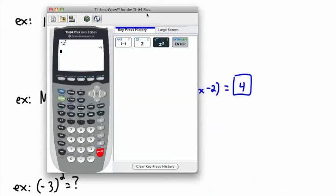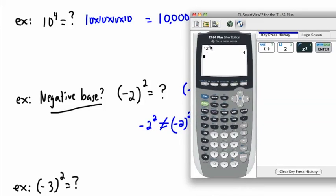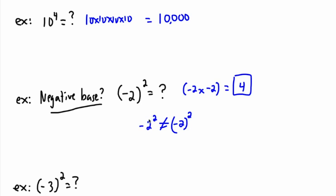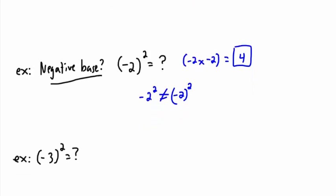What did the calculator do? It follows the rules of order of operations. We always do exponents first. So if you say negative 2 squared, it says: I have a negative and I have 2 squared — but first I do 2 squared. 2 to the power of 2 is 4, and then multiply by negative 1, which gives negative 4. So negative 2 squared is not the same as negative 2 in brackets, squared. If you want to say negative 2 squared, make sure you put negative 2 in brackets. Your calculator isn't stupid — it uses the rules of order of operations.